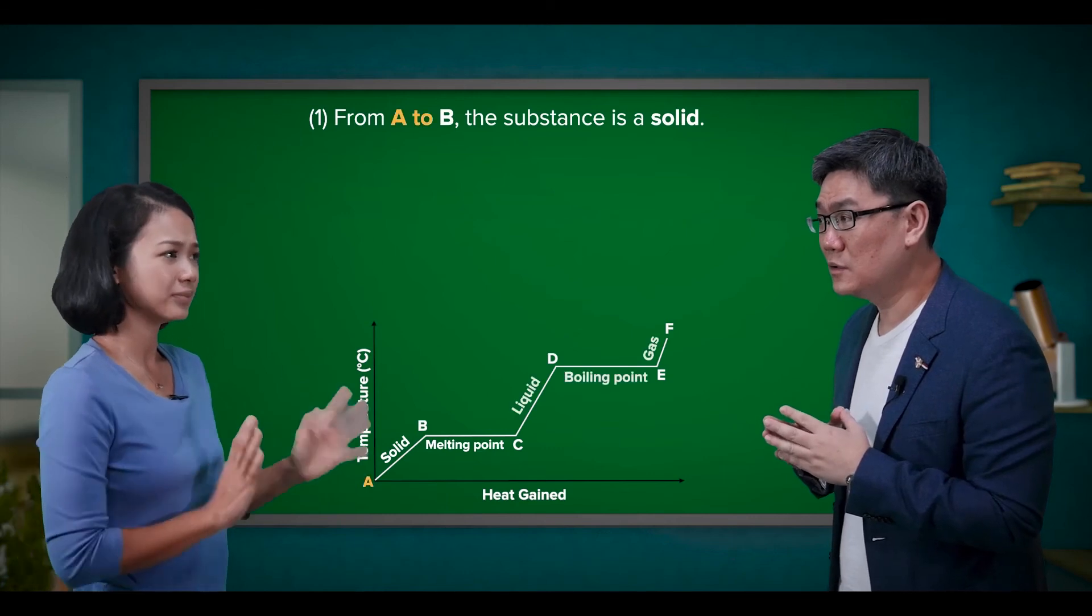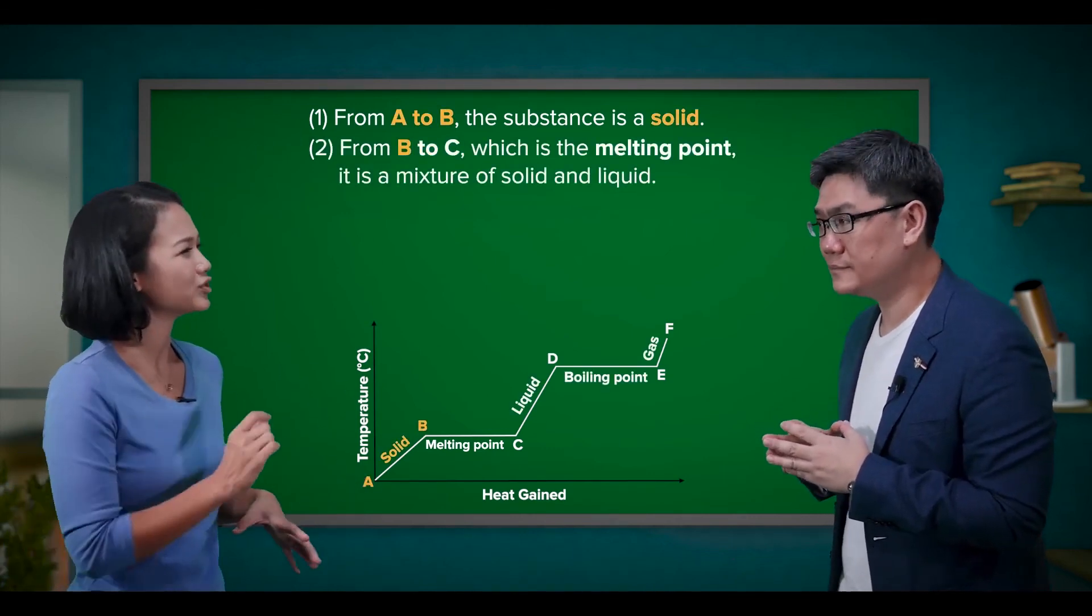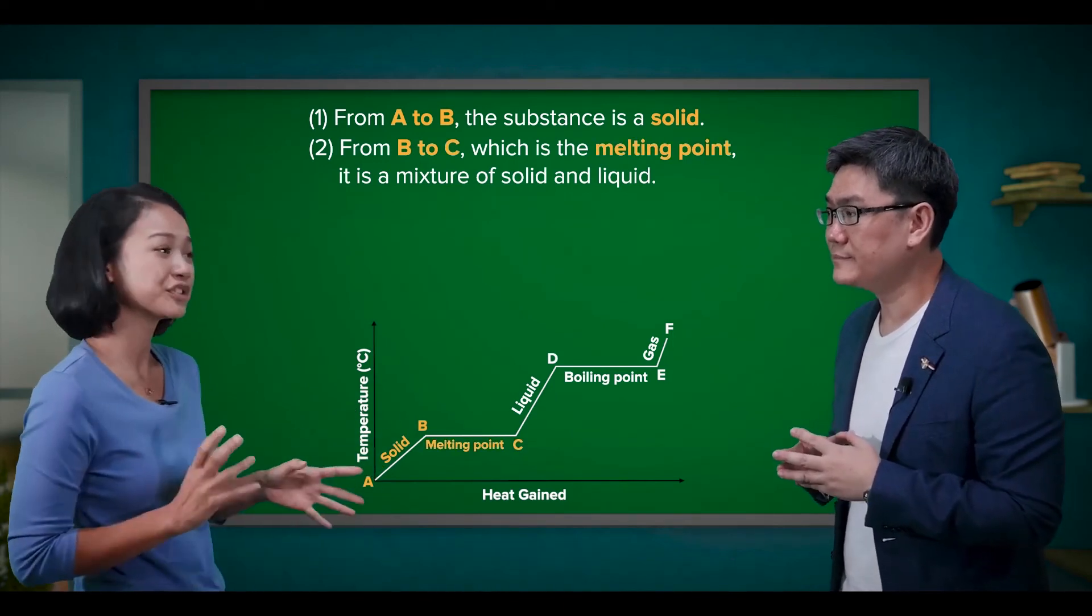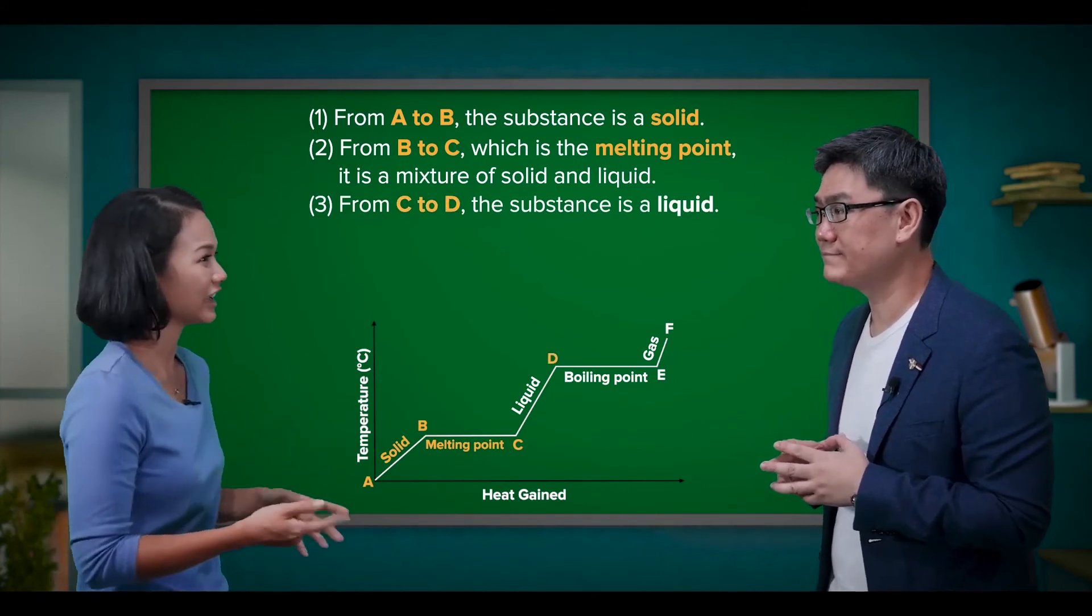So from A to B, the substance is a solid. And then from B to C, which is the melting point, it is a mixture of solid and liquid. Then from C to D, it is a liquid.